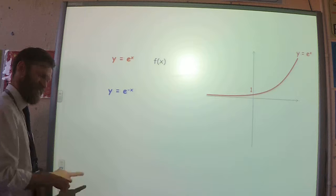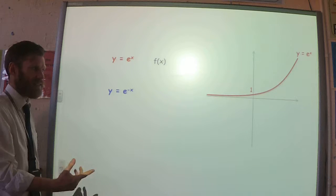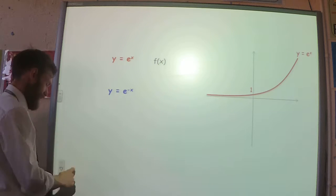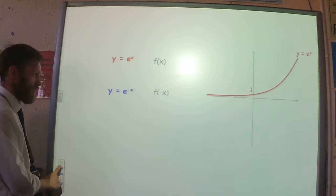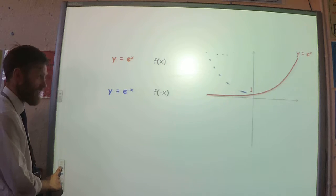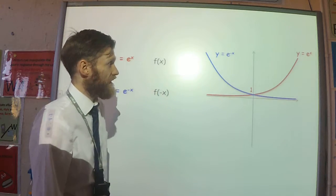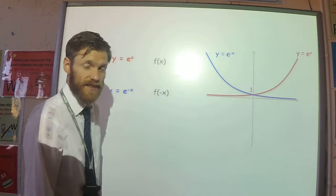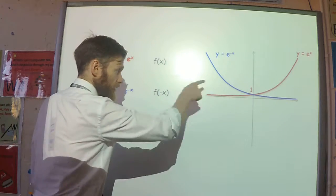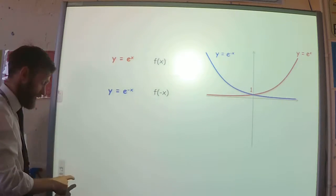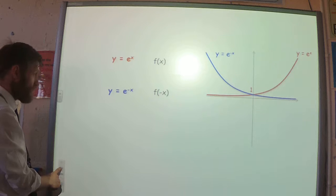When you have a minus inside the exponent — e to the power of minus x — that's a reflection in the y-axis, still going through the point (0, 1).